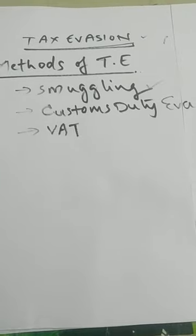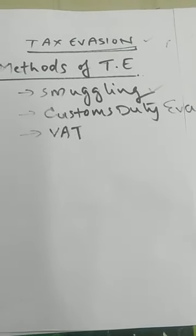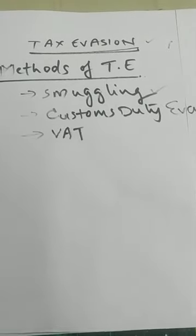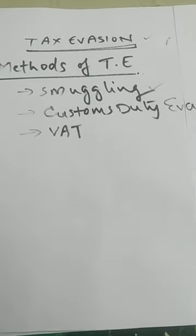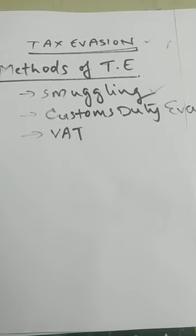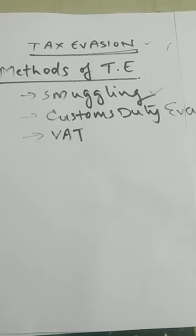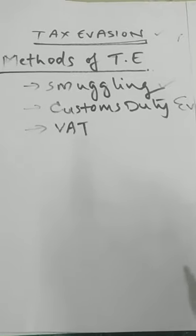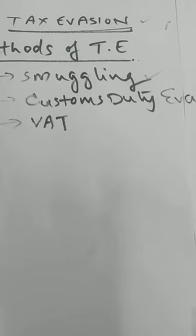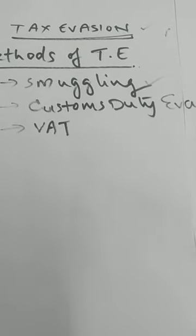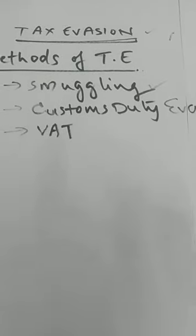For example, suppose you sell 100 products with a value of 100 rupees. In that 100 rupees, 1 rupee should be paid as VAT. You collect VAT from the customer, but you need to pay this VAT to the government. However, some people collect VAT from customers but do not pay it to the government.